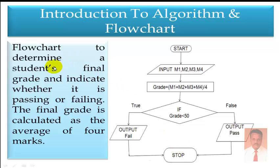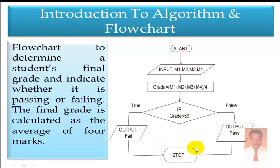Now we want to draw a flowchart to determine the student's final grade and indicate whether it is passing or failing. The final grade is calculated as the average of four marks. Step 1: Start. Step 2: Accept inputs M1, M2, M3, M4. Step 3: Grade = (M1 + M2 + M3 + M4) / 4. Step 4: Decision — if Grade is less than 50, print Fail; otherwise print Pass. Step 5: Stop.